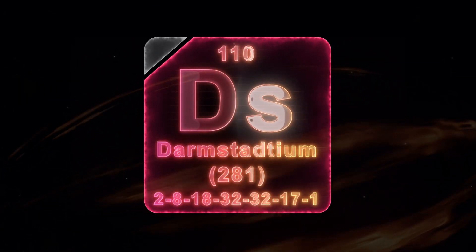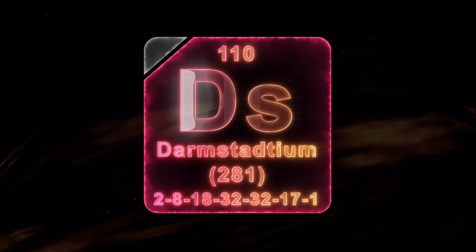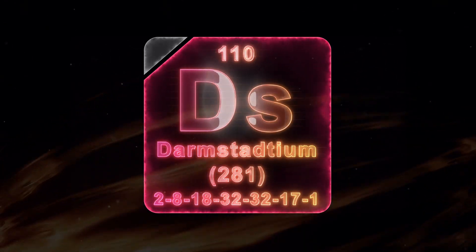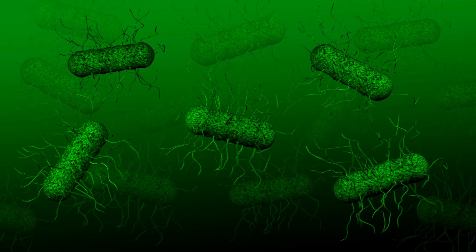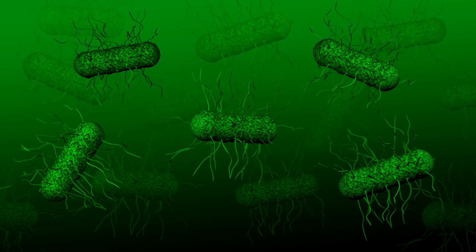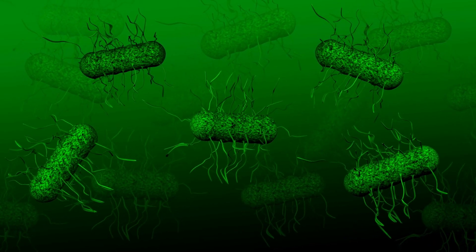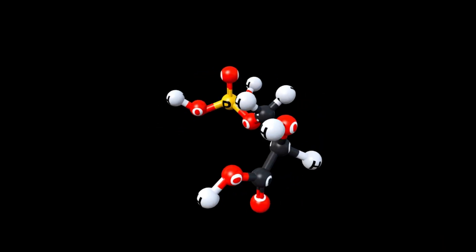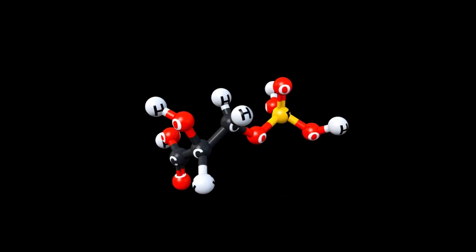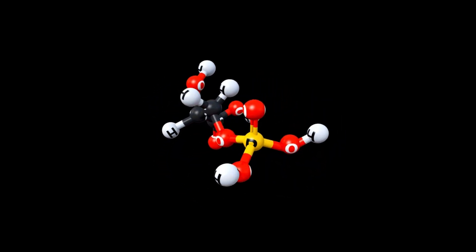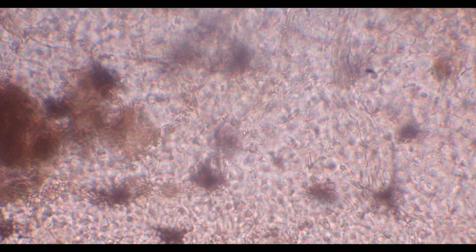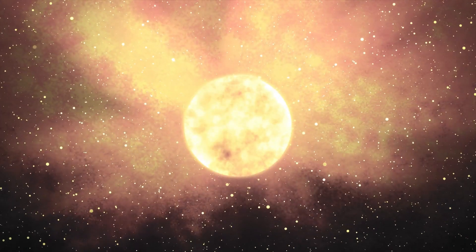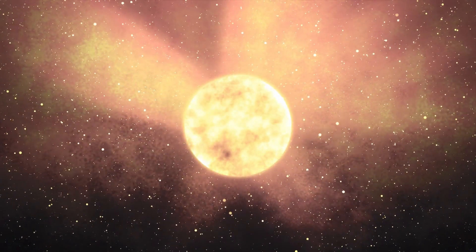DMS is produced exclusively through biological processes on Earth, particularly by microorganisms in the oceans. This is significant because on Earth, DMS is a reliable biomarker for life. Its presence in the atmosphere of K-218b suggests that there could be biological processes occurring on the planet. The fact that K-218b is orbiting a red dwarf star, known for its intense radiation and generally considered inhospitable to life, only makes this discovery more intriguing.